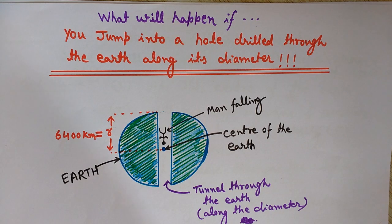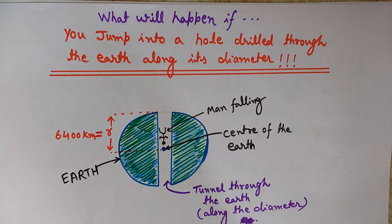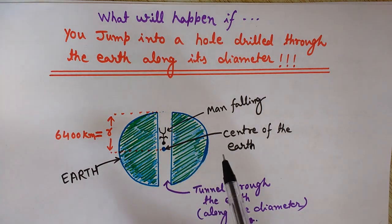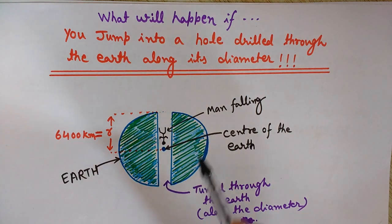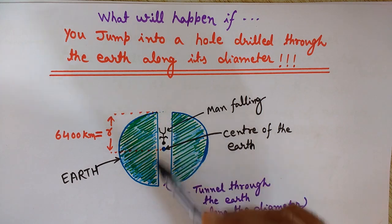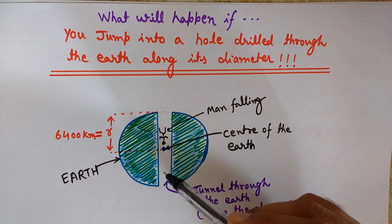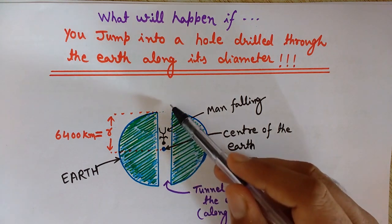Hi friends, I am Lalith Vasist and you are watching Engineering Made Easy. Today we are going to discuss a very interesting problem: what will happen if you jump into a hole that has been drilled through the earth along its diameter? This is the earth, and we have drilled a tunnel from the north pole to the south pole along its diameter.